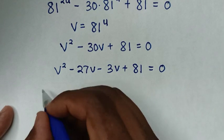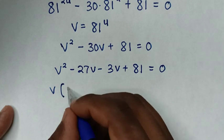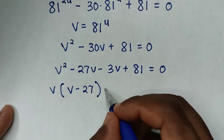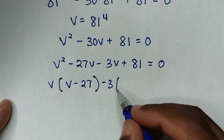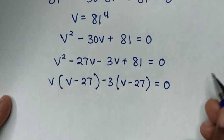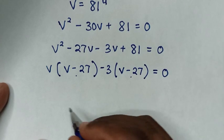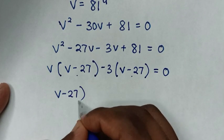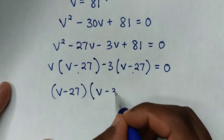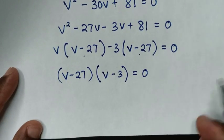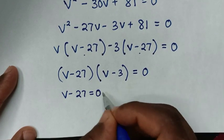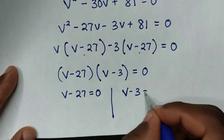Factoring by grouping: v is common from the first two terms, giving v(v − 27), and −3 is common from the last two terms, giving −3(v − 27). So (v − 27)(v − 3) = 0, which gives two solutions: v = 27 and v = 3.